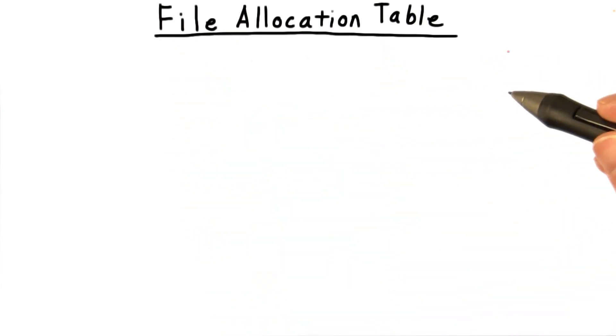The file allocation table format was originally used in the late 1970s on floppy disks and became the standard in DOS and early Windows machines.